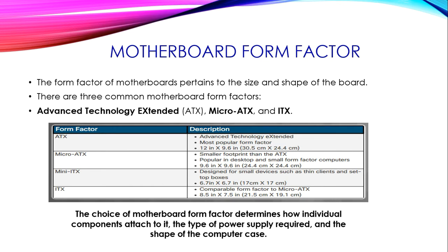ATX (Advanced Technology Extended) is the most popular form factor, available in a size of 12 by 9.6 inches. Micro ATX has a smaller footprint than ATX and is popular in desktop and small form factor computers, available in 9.6 by 9.6 inches. Mini ITX is designed for small devices such as thin clients and set-top boxes, available in 6.7 by 6.7 inches. ITX is compatible with Micro ATX form factor and is available in 8.5 by 7.5 inches.